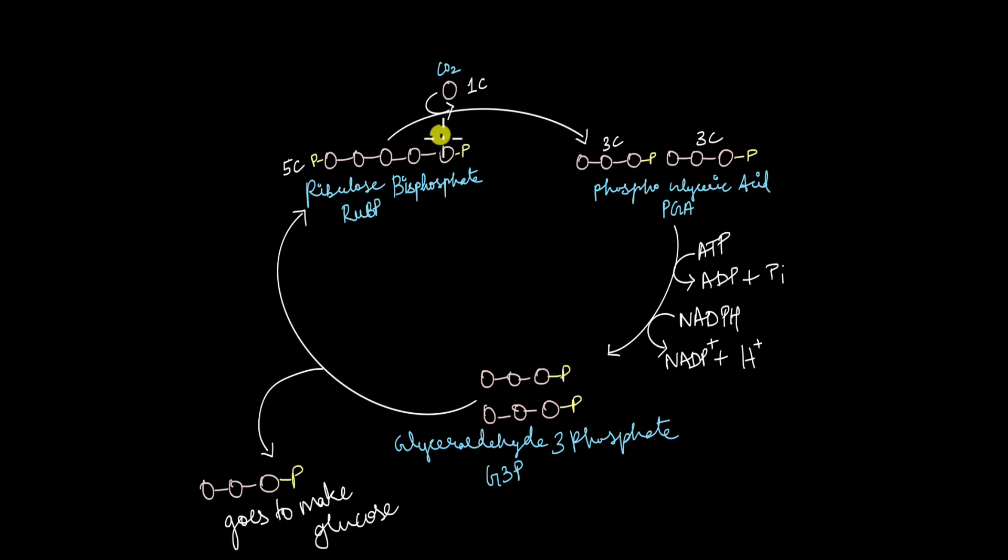So this is the simplified reaction of the Calvin cycle. This is how it looks like. We are going to start with a single carbon dioxide molecule. This circle here represents the number of carbon atoms in the compound. In the first step, in the carbon fixation step, carbon dioxide will combine with a five carbon compound known as ribulose bisphosphate or RUBP. So this is five carbons, ribulose bisphosphate or RUBP.